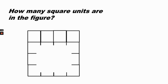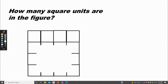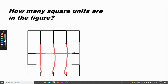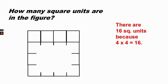How many square units are in this figure? To find the answer we can imagine that the lines are extended all the way down and all the way across. There are sixteen square units. The rows are equal and there are four units in row one, and four times four equals sixteen.